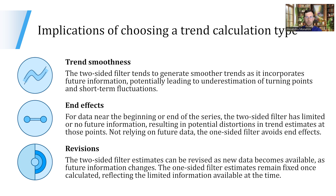There are some implications in terms of choosing the trend calculation method. First, we have to think about trend smoothness: the two-sided filter tends to generate smoother trends because it incorporates future information, which can potentially lead to an underestimation of turning points or short-term fluctuations. There is also the problem of end effects — for data near the beginning or end of the series, the two-sided filter has limited or no future information available, resulting in potential distortions. Not relying on future data, the one-sided filter avoids end effects. Additionally, two-sided filter estimates can and will be revised when new data becomes available, whereas one-sided filter estimates remain fixed once calculated, reflecting their use of only past information.